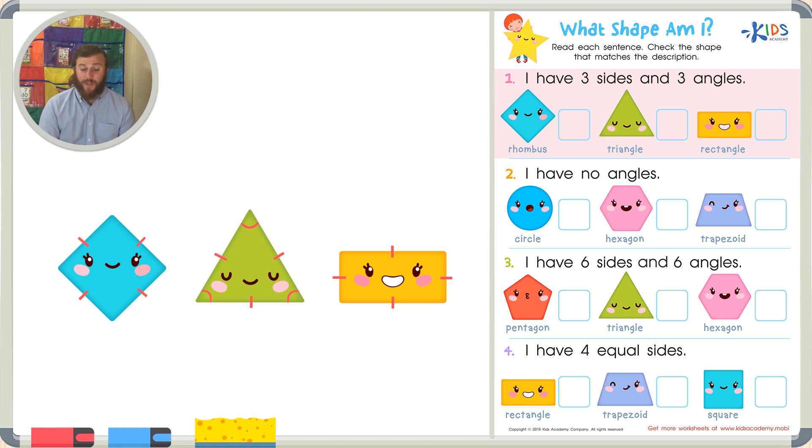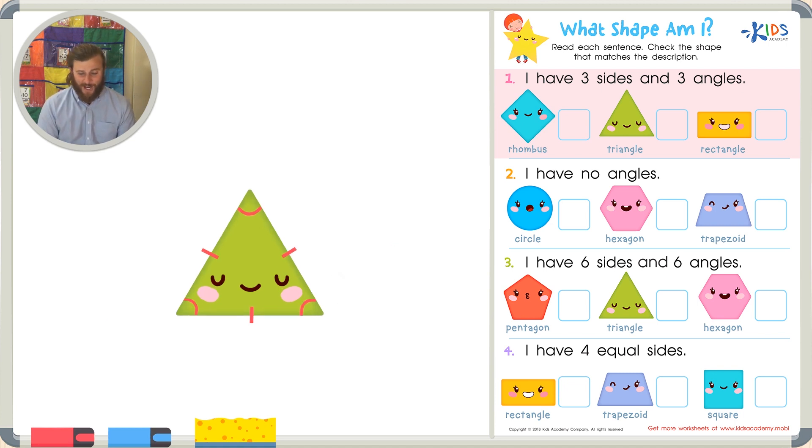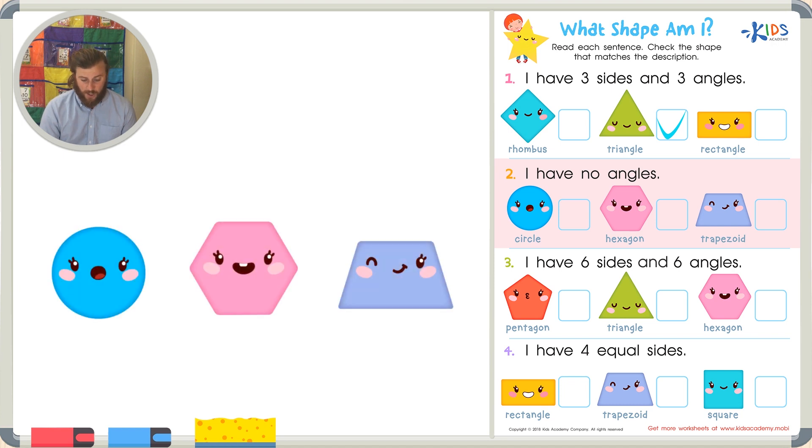Let's read the next description: I have no angles. Can you think of a shape that has no angles? I'll give you a hint: this shape also has no sides. Well, if we look at our three shapes - a circle, a hexagon, and a trapezoid - it's pretty easy to tell the only shape with no sides is our circle. Because our hexagon has one, two, three, four, five, six sides, and our trapezoid has one, two, three, four sides. So the only shape with no angles is our circle.